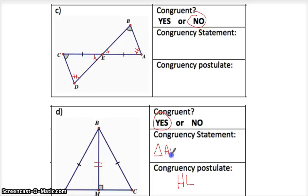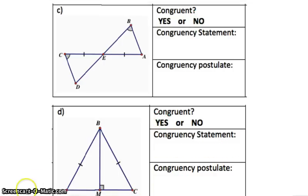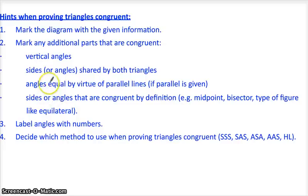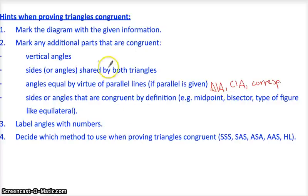I'll call the first triangle ABM, and it's congruent to... A in one triangle goes with C in the other, and the right angle at M goes with the right angle in the other triangle. For hints when doing proofs: mark the diagram with the given information, note any shared segments or vertical angles and list them with their reasons. Parallel lines give you alternate interior or corresponding angles, and midpoints or bisectors give you additional equal measurements.